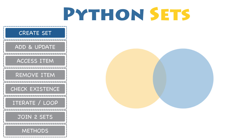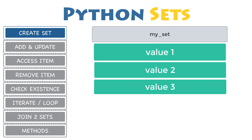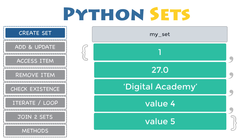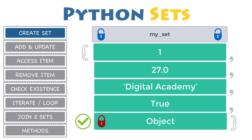Creating a set. There are several ways to create a new set in Python. The simplest way is to enclose all of the items, also known as elements, inside curly braces and separated by commas. It can have any number of items, and they can even be of different data types: integer, float, string, boolean, or even another object. Although a set itself is mutable, it cannot contain mutable objects. Therefore, only immutable objects like numbers, strings, and tuples can be a set item. But lists and dictionaries are mutable, so they cannot be a set item.